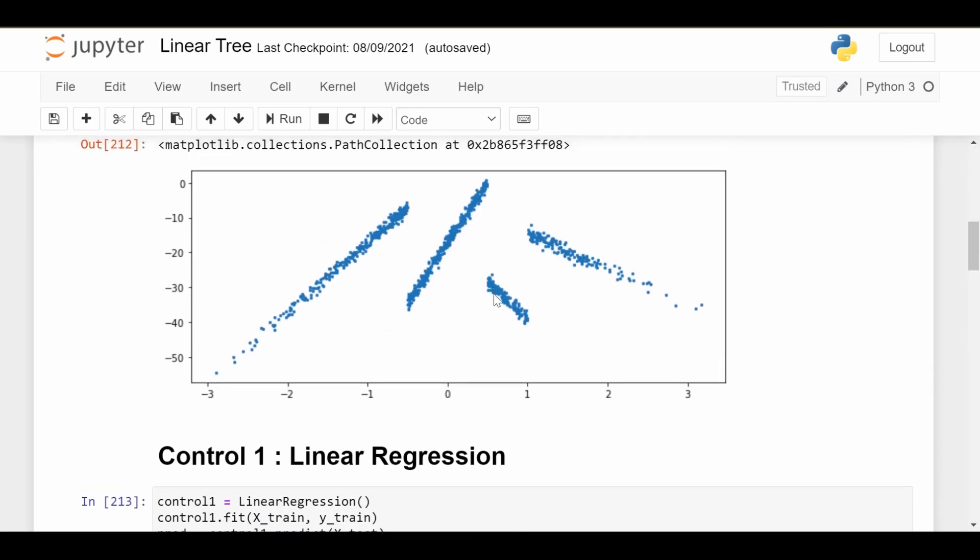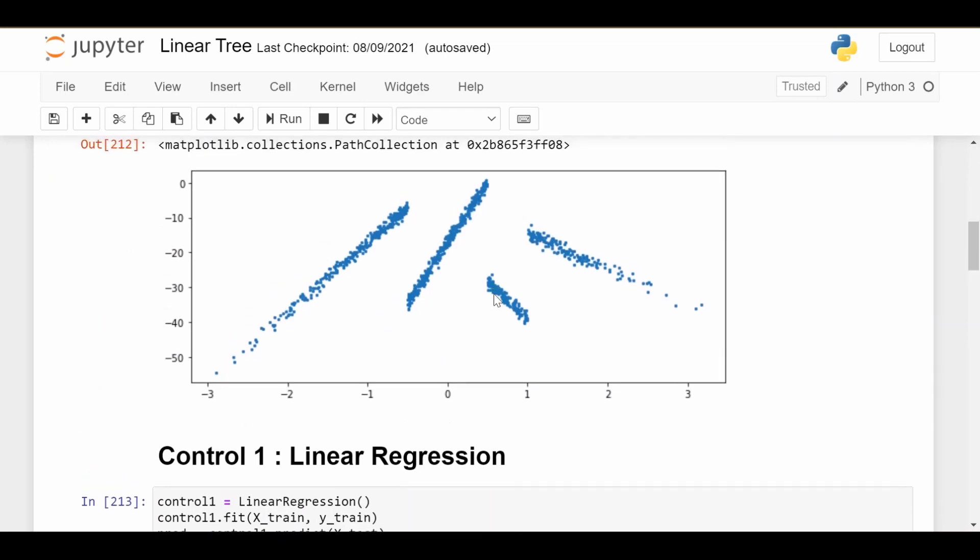We're going to use some synthetic data that looks like this. This is a perfect candidate for linear trees because you can see there are four local linear trends pretty clearly. But using a single linear regression, trying to put a single line through it, probably isn't going to do the trick as we'll see.